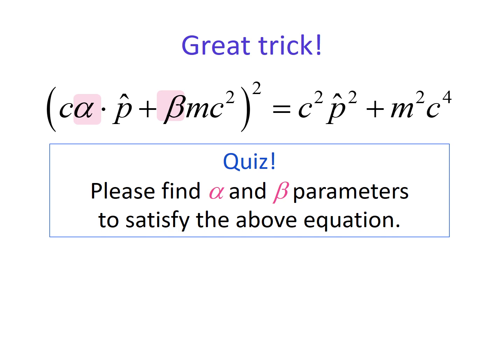But there is a great trick. Actually, we can find the parameters alpha and beta which satisfy this equation. This is a fun quiz for you. Please expand the left hand side and compare it to the right hand side. Can you find good numbers for alpha and beta? It looks impossible, but it is possible if we choose alpha and beta as matrices.